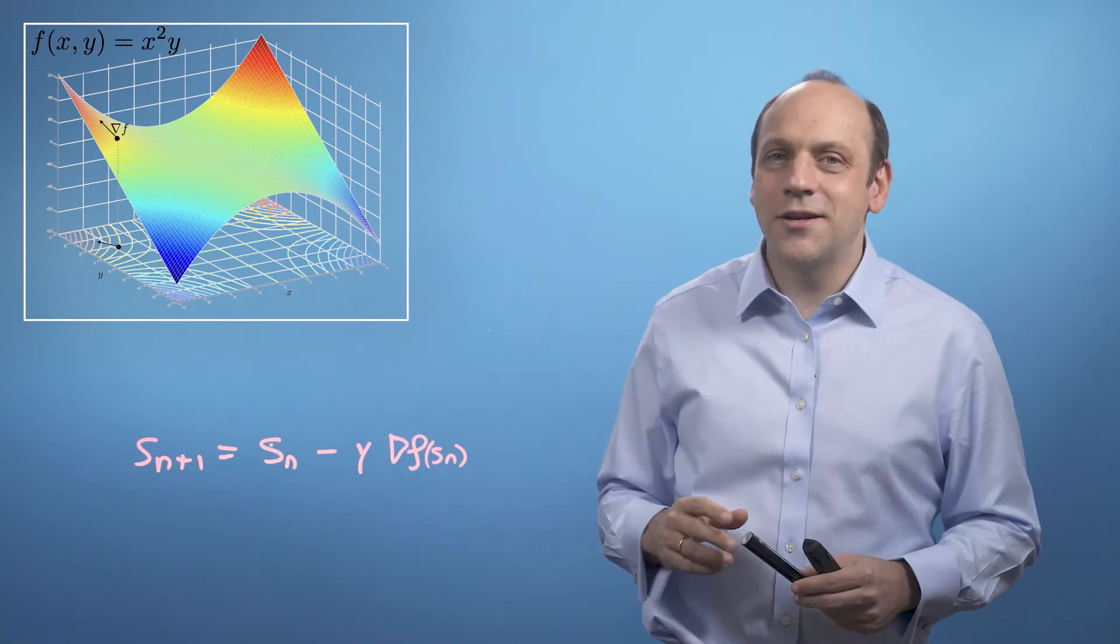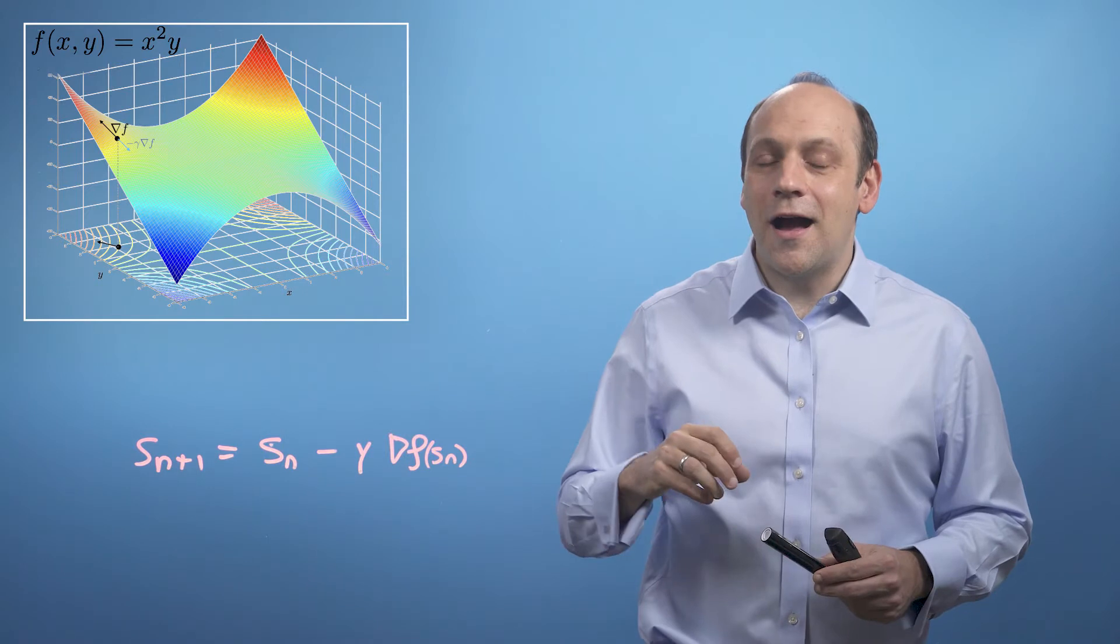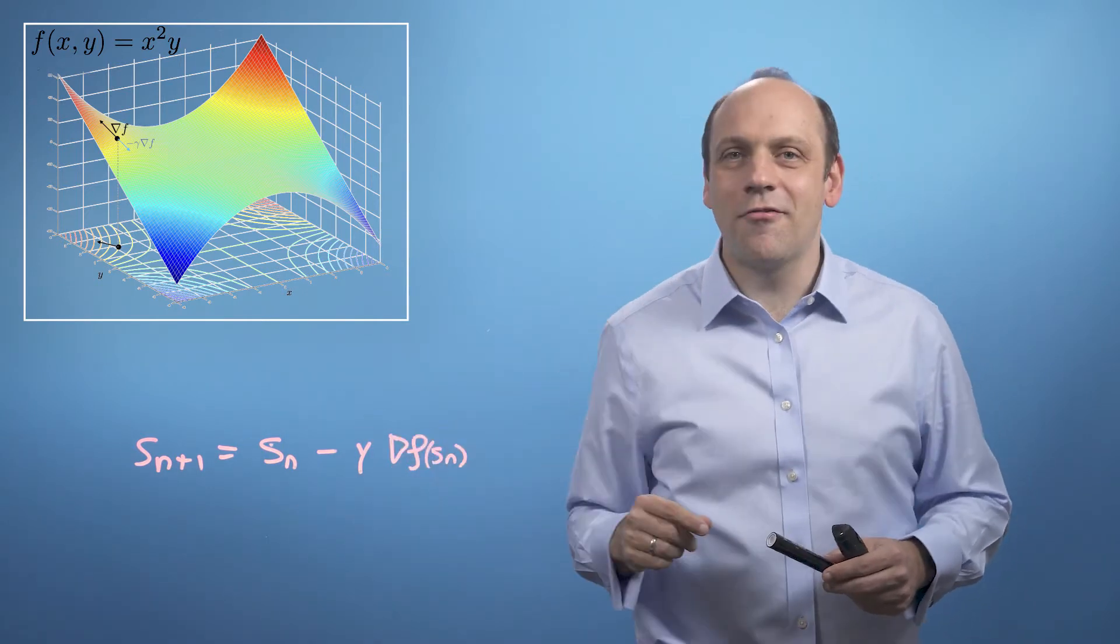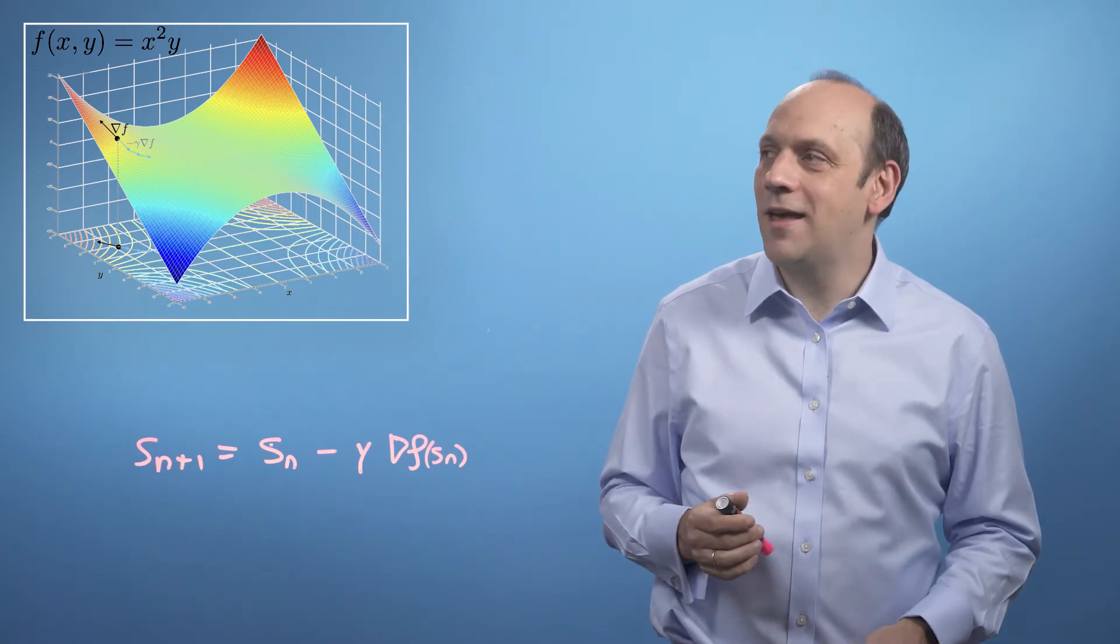On the graph, that's going to look like taking a little step, the little blue one down the hill. And then we re-evaluate, make another Sn plus 1, and make another step, and take a series of steps down the hill.